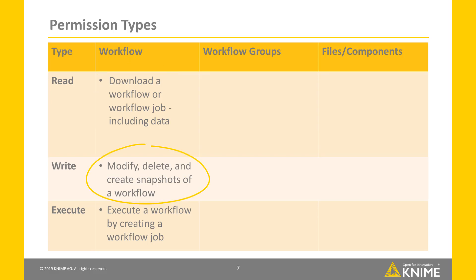With write permissions, the user can modify, delete and create snapshots of a workflow. A user with permission to execute can execute a workflow that already exists on the server. This means the user can create a workflow job, but the user is not allowed to download that job or store the job after the job has finished, unless the user has, in addition, also read permission.